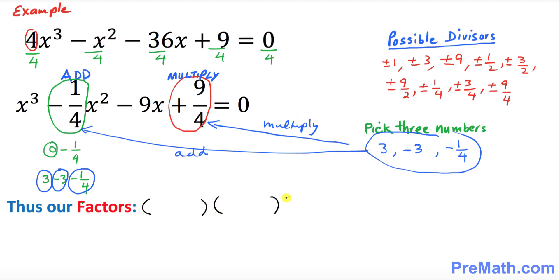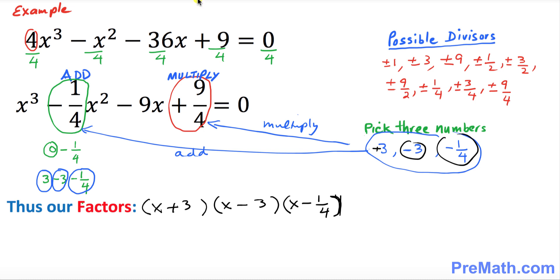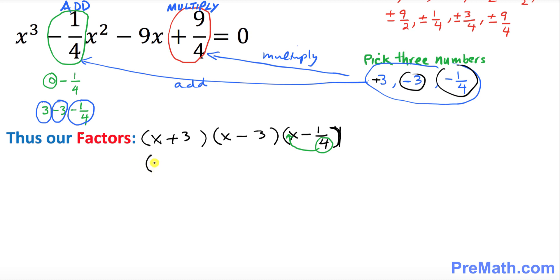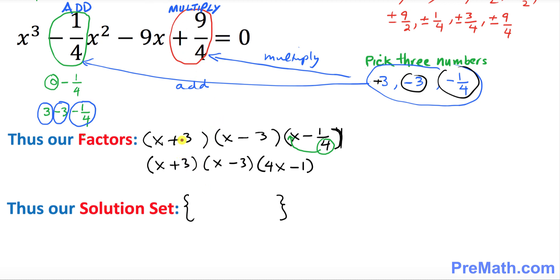Put down three parentheses with x, x, and x. The first number is positive 3, the second is negative 3, and the third is negative 1 over 4. Since 1 over 4 is a fraction, move the denominator 4 to the front. Our factored form becomes: (x + 3)(x − 3)(4x − 1).